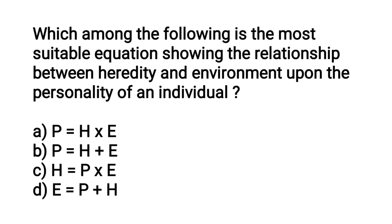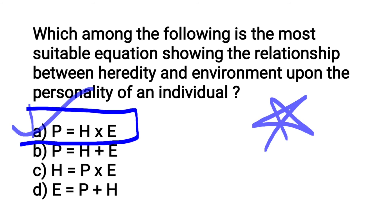Which among the following is the most suitable equation showing the relationship between heredity and environment upon the personality of an individual? The options are: P = H × E, P = H + E, H = P × E, or E = P + H. Personality is the product of heredity and environment, so the correct answer is P = H × E.